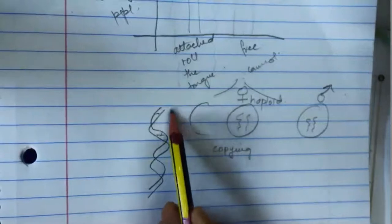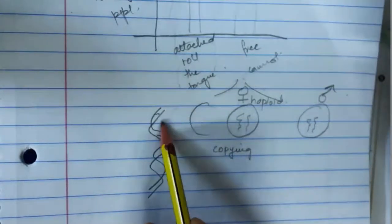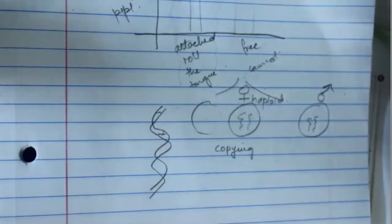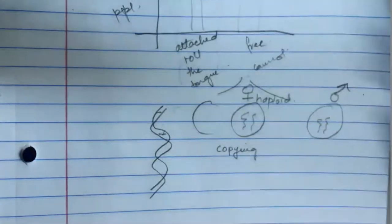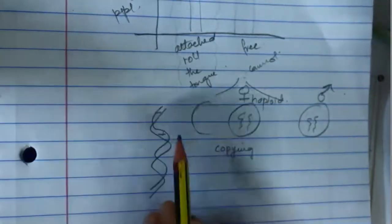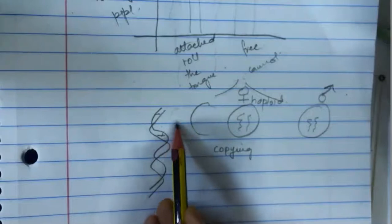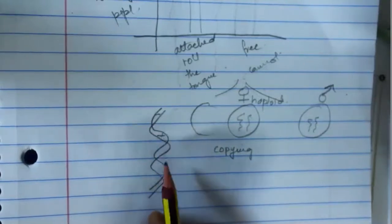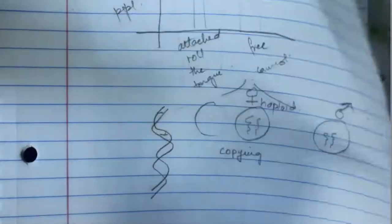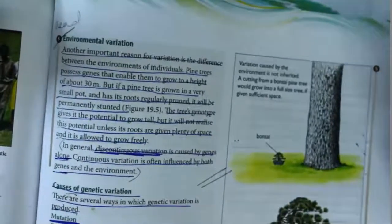Ionizing radiations have enough energy to knock an electron out of an atom, ionizing it. These radiations can damage the bonds between DNA bases, the base molecules themselves, and even the backbone of the DNA double helix. This is one way mutation causes variation in a population.